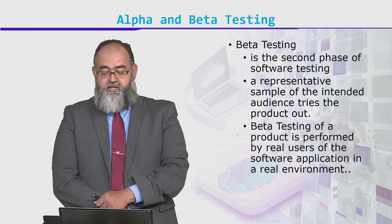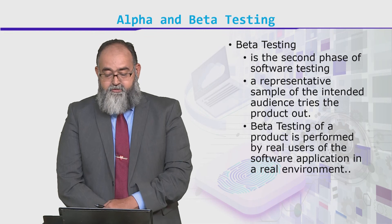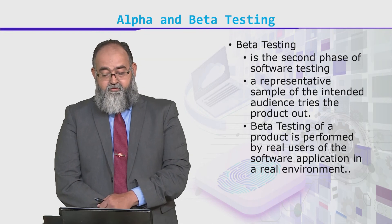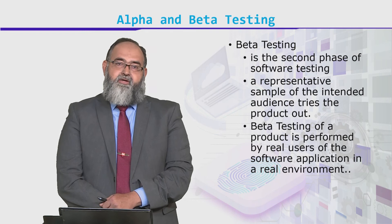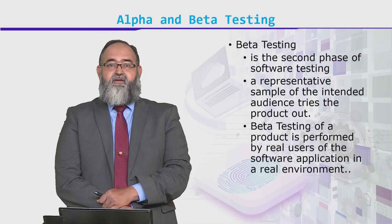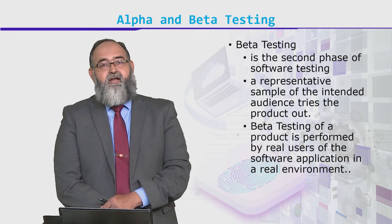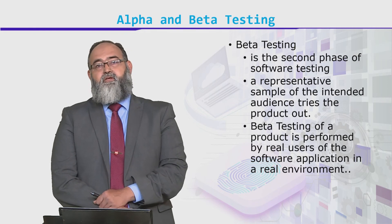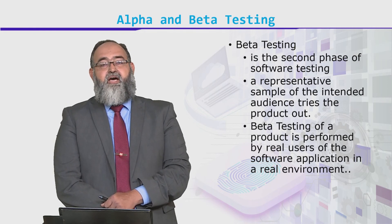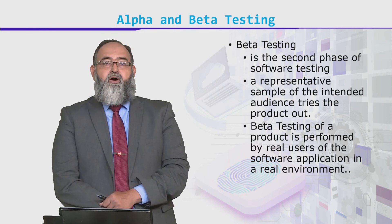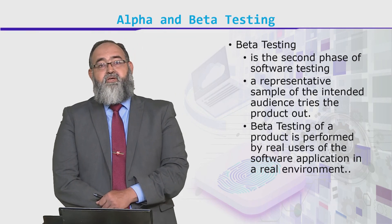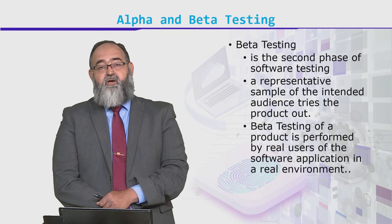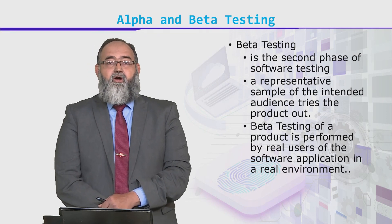Beta testing is performed by real users of the software application in a real environment. That is the key difference: alpha testing uses in-house employees — your QA testers — whereas in beta testing, you are selecting a sample or a representative sample of the actual users.